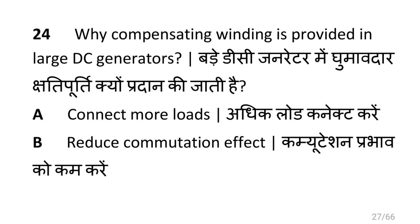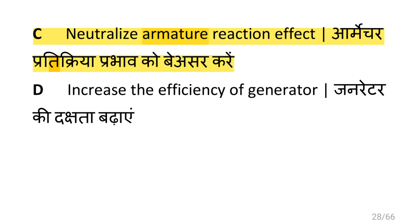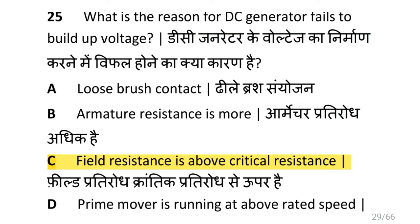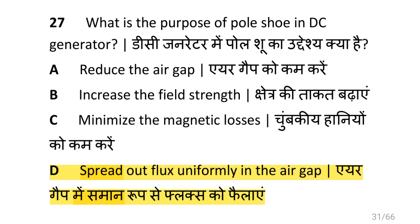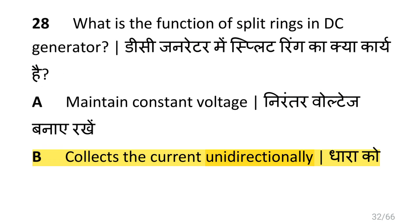Why is compensating winding provided in large DC generators? That is to neutralize the armature reaction effect. What is the reason a DC generator fails to build up voltage? That is field resistance is above critical resistance. What is the name of the generator if its field is connected in parallel with armature? That is shunt generator. What is the purpose of pole shoe in DC generator? That is to spread out flux uniformly in the air gap. What is the function of split ring in DC generator? That is to collect the current in one direction.